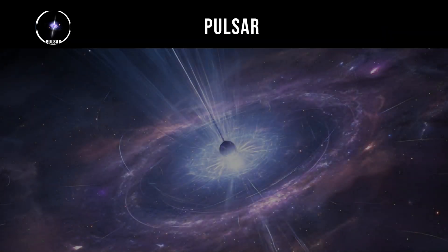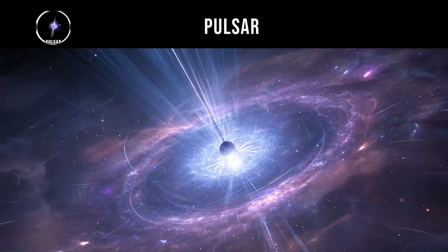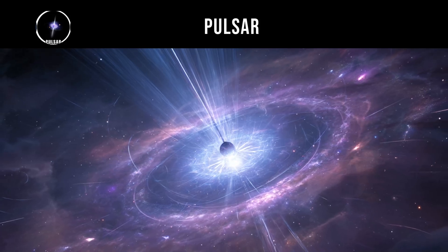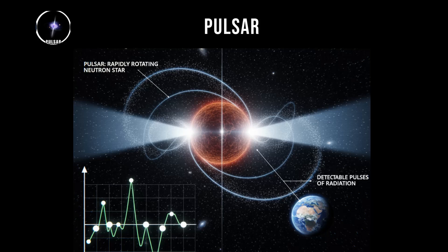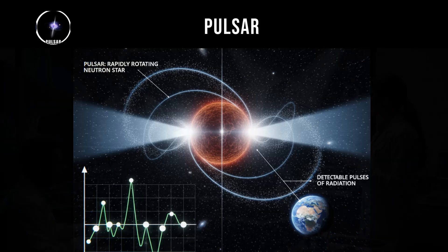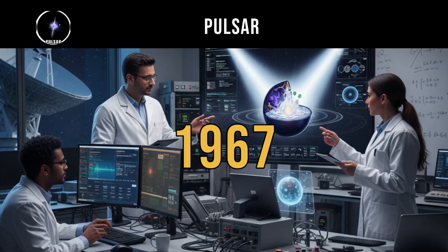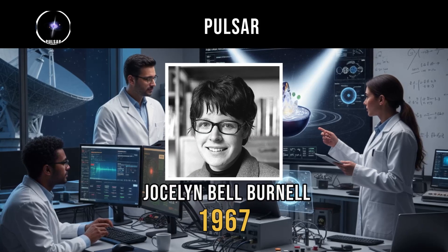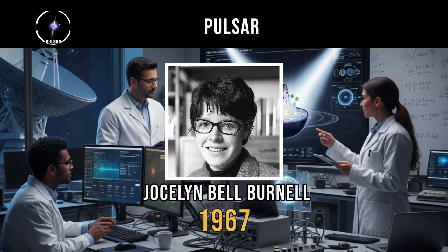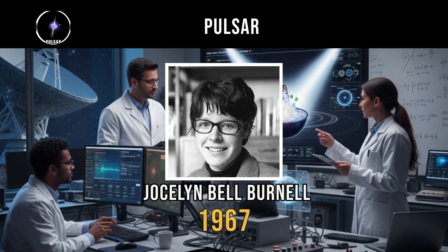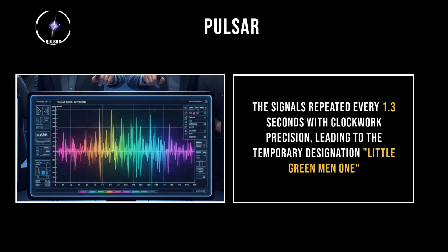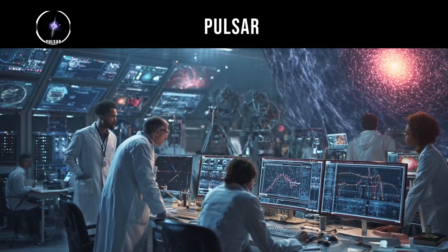Pulsar. Pulsars are rapidly rotating neutron stars that emit regular pulses of electromagnetic radiation detectable from Earth. These pulses occur when the neutron star's radiation beams sweep across our line of sight as the star rotates, creating a cosmic lighthouse effect. The first pulsar was discovered in 1967 by Jocelyn Bell Burnell, who initially thought the regular radio signals might be communications from extraterrestrial intelligence. The signals repeated every 1.3 seconds with clockwork precision, leading to the temporary designation Little Green Men 1, before astronomers realized they were observing a natural phenomenon.